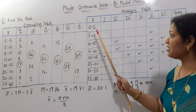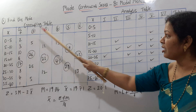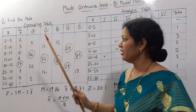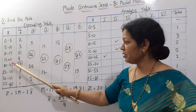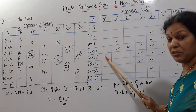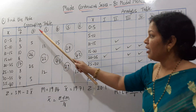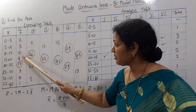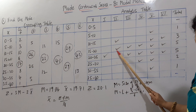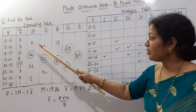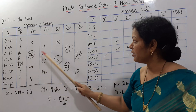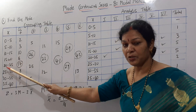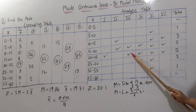We prepare the analysis table with columns for X values 1 through 6 and a total. In column 2, the highest is 26, which comes from 10 plus 16. So we tick mark the class intervals 10 to 15 and 15 to 20. In the third column, the highest is 23, which is 16 plus 17, covering class intervals 15 to 20 and 20 to 25. We tick mark these two.